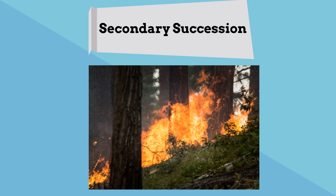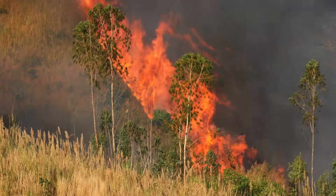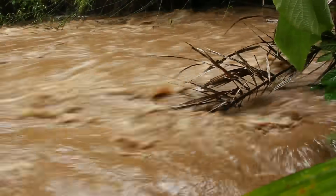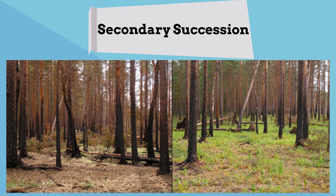Secondary succession occurs when an existing ecosystem has been destroyed or disturbed. It is more minor in magnitude compared to primary succession. For example, a forest fire may destroy a large area of trees and plants, or flooding can destroy an area. In this before and after picture, the fire destroys plants but the soil remains. Two years later, the forest has grown back.